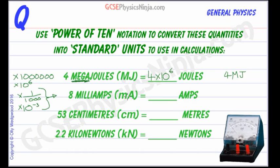So, 8 milliamps, when we convert it into normal standard units, will be 8 times by 10 to the minus 3 amps. And if we were to write this out as a normal number, it would be 0.008 amps. Because that decimal point has been moved three spaces to the left. 1, 2, 3 to get the normal measurement in amps.